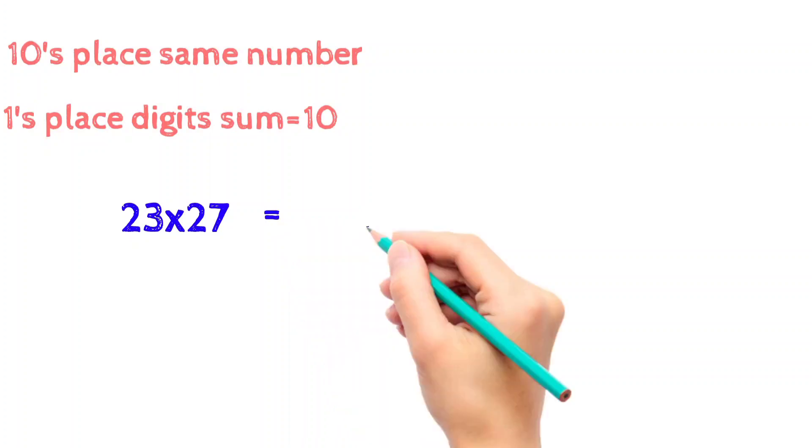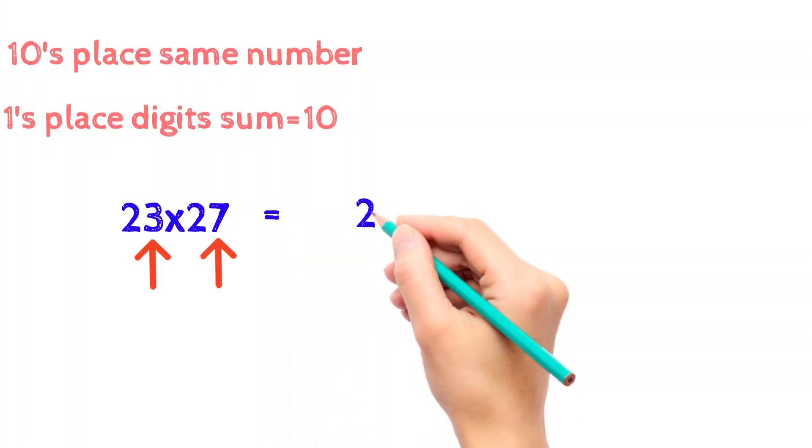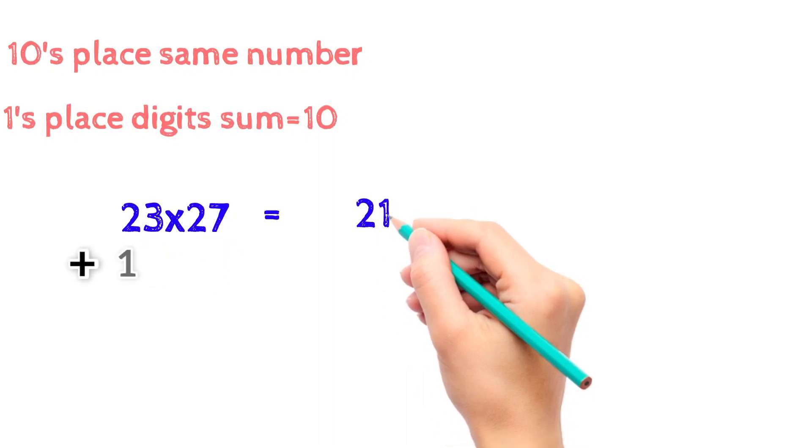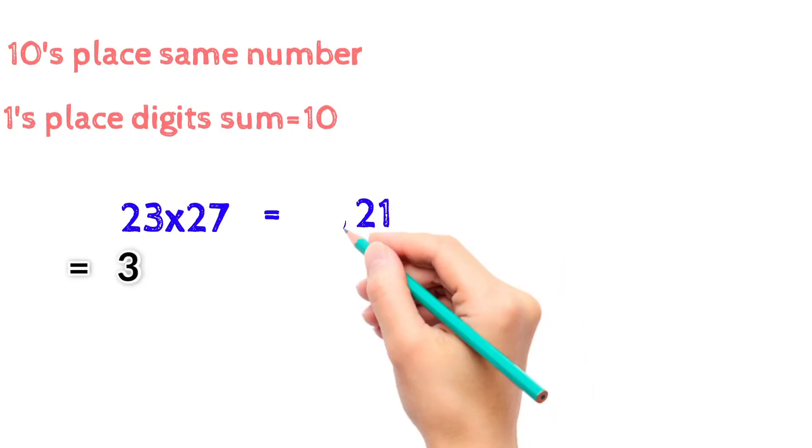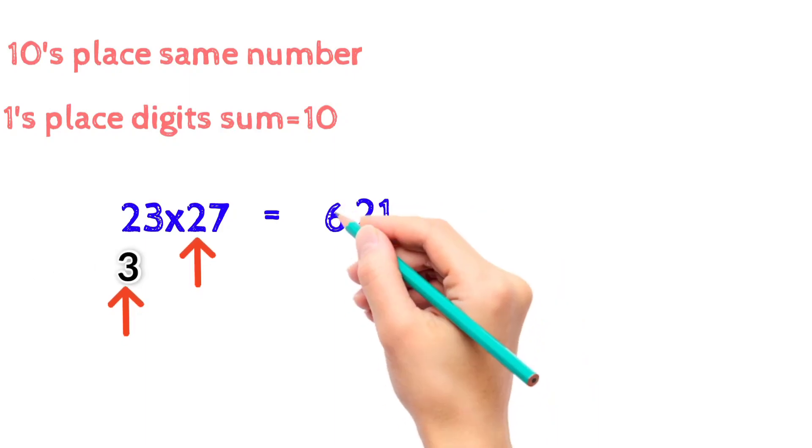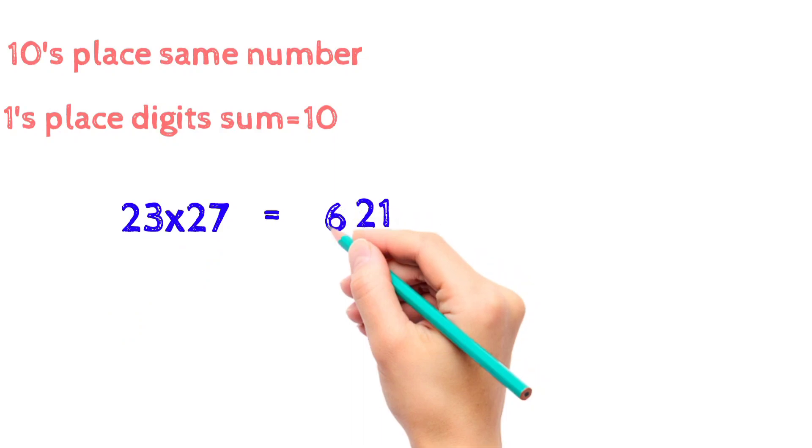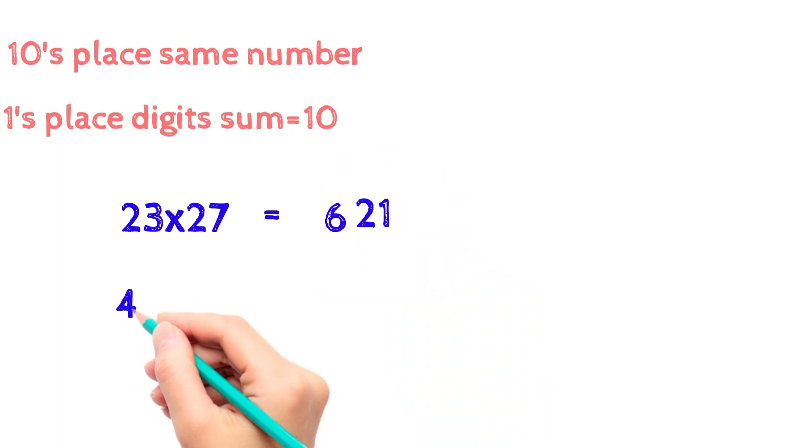In that case we have to multiply the ones place digit. Here it is 3 into 7 which is equal to 21. Now add 1 to the tens place number which becomes 3. Now multiply 2 and 3 which is equal to 6. Here the answer is 621. 23 into 27 is equal to 621.